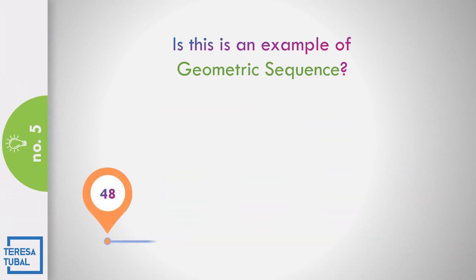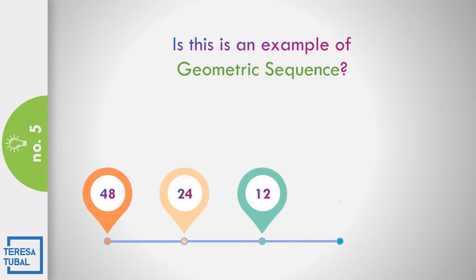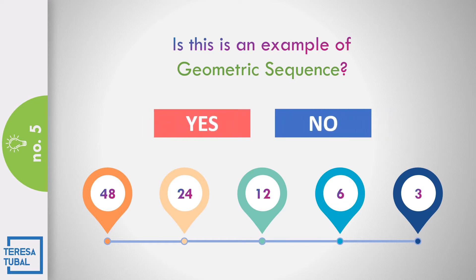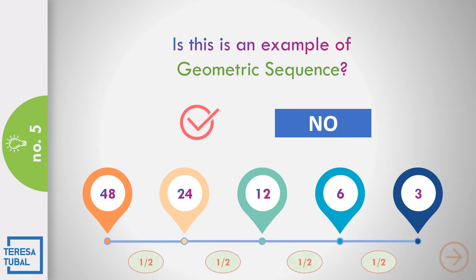Is this an example of the geometric sequence 4, 8, 24, 12, 6, and 30? Yes or no? Correct! The answer is yes because the common ratio is equal to 1 half. 24 divided by 48, the answer is equal to 1 half.